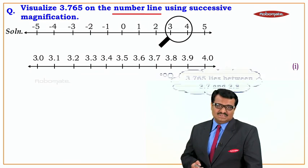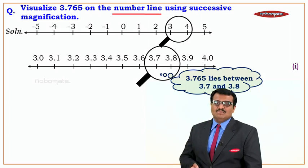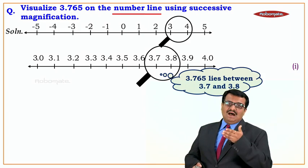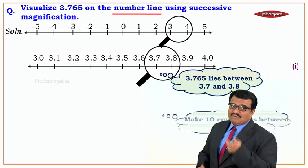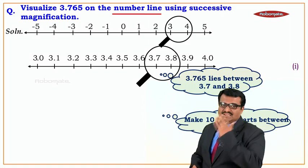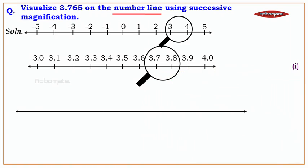Now we are going to magnify the part between 3.7 and 3.8. We will make 10 equal parts between 3.7 and 3.8 by drawing one more number line with 10 divisions. We'll mark the first one as 3.7 and the last one as 3.8.